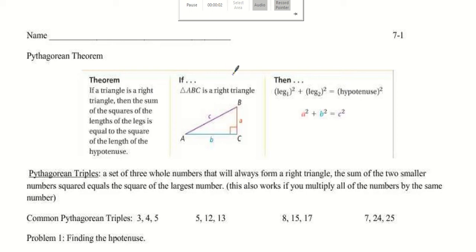Welcome to Pythagorean theorem day. Remember, the Pythagorean theorem — a squared plus b squared equals c squared — only works in right triangles and only refers to the three sides of that triangle.